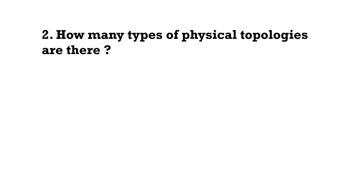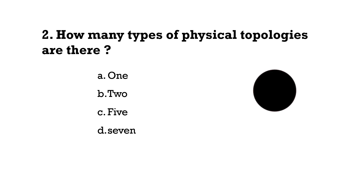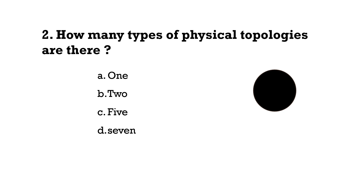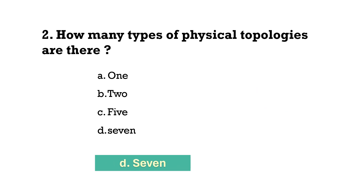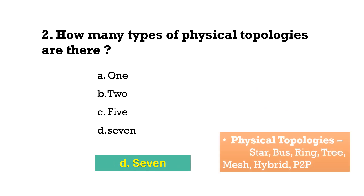How many types of physical topologies are there? There are seven types: star, bus, ring, tree, mesh, hybrid, and point-to-point (P2P).